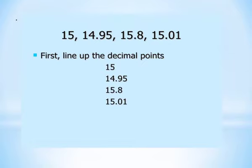To order decimals, the first step is to write the numbers in a column with the decimal points lined up. Here you can see the decimal points lined up: 15, 14.95, 15.8, 15.01.